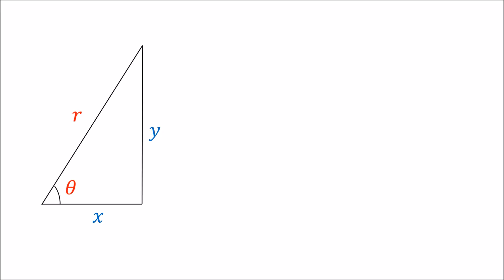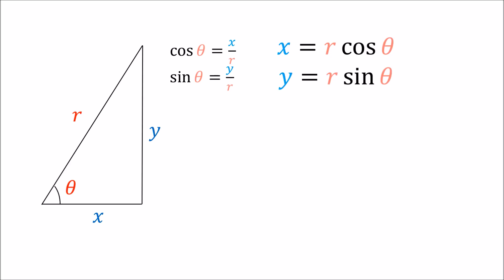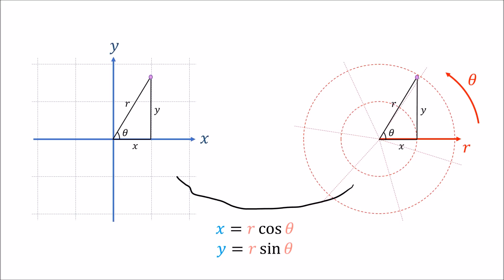We know that cosine equals adjacent over hypotenuse, so cosine theta equals x over r, meaning x equals r times cosine theta. And sine equals opposite over hypotenuse, so sine theta equals y over r, meaning y equals r times sine theta. These two equations help us convert from polar coordinates r theta into Cartesian xy coordinates.